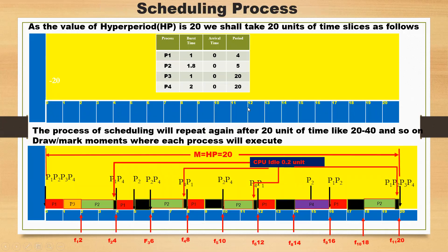Now let us consider the scheduling. The hyperperiod is 20, so we take 20 units of time. Since all processes arrive at time 0, all processes will be ready at 0. P1 has CPU burst time of 1, so P1 runs for 1 unit. Then P3 runs 1 unit. Then P2 runs for 1.8 milliseconds, and 0.2 milliseconds of CPU is idle in that frame.